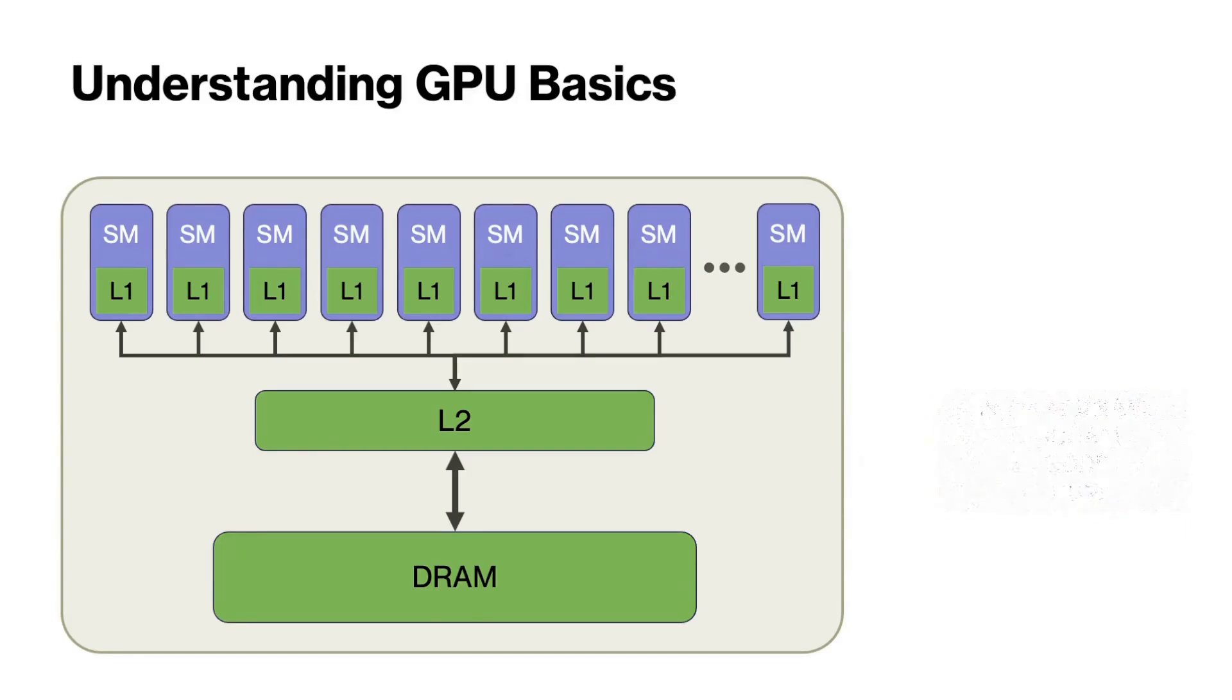As an example, let's examine the A100 GPU. The A100 is equipped with 108 streaming multiprocessors and features a 40 megabyte L2 cache. In terms of DRAM, it has 80 gigabyte of HBM2 with a memory bandwidth of 2000 gigabyte per second.